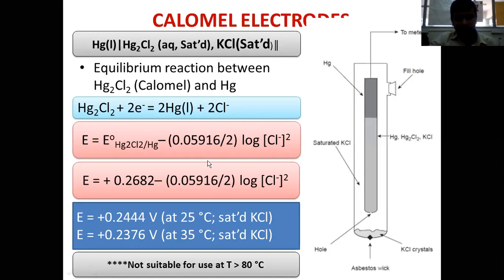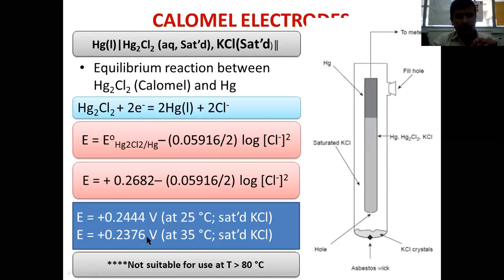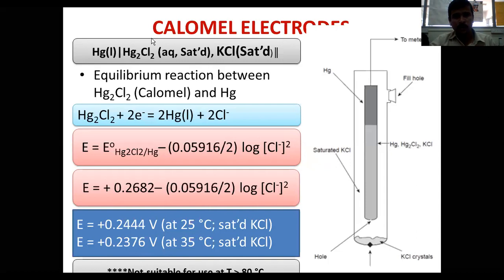This is the demerit of the saturated calomel electrode: as temperature is increased, the anodic potential decreases. Therefore this electrode is suitable only up to 80°C, provided the E values at the particular temperatures are known. If temperature exceeds 80°C, this electrode becomes unsuitable for use.